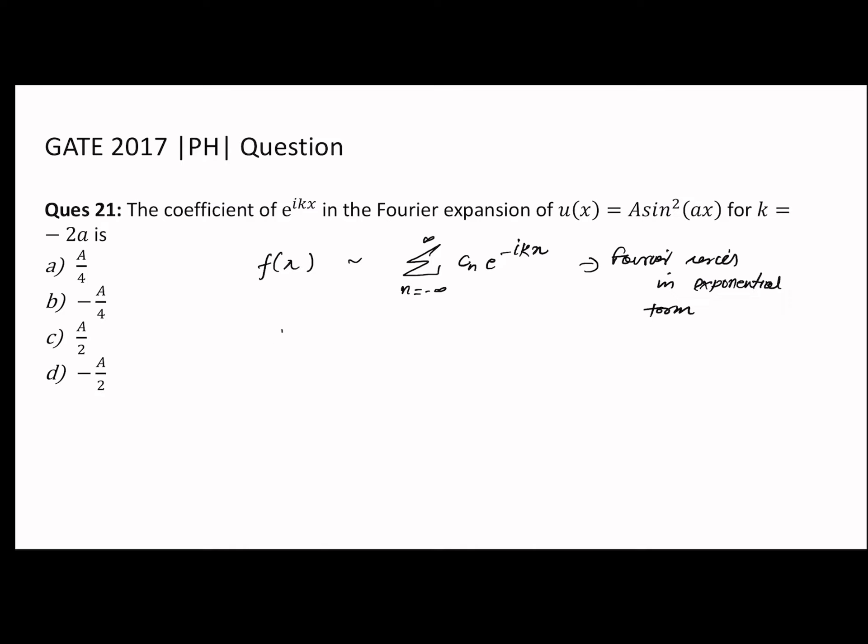The coefficient c_n is 1/(2π) times the integral from -∞ to +∞ of f(x)e^(ikx)dx. We can calculate this coefficient by putting the function A sin²(ax)e^(ikx) into the integral and solving it.